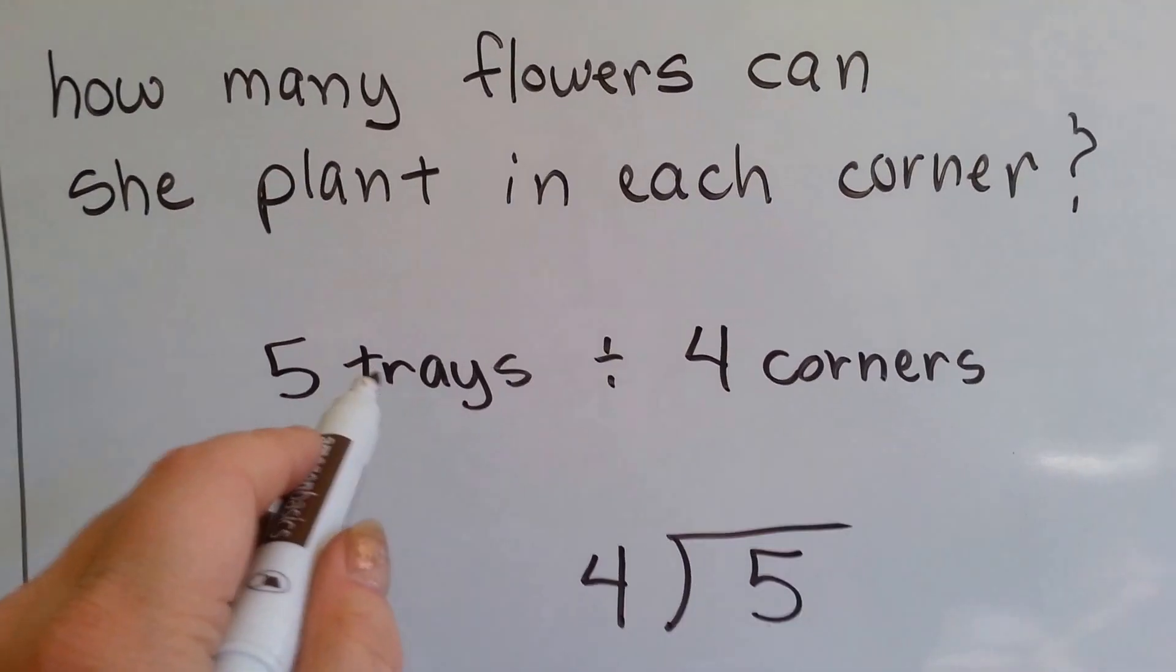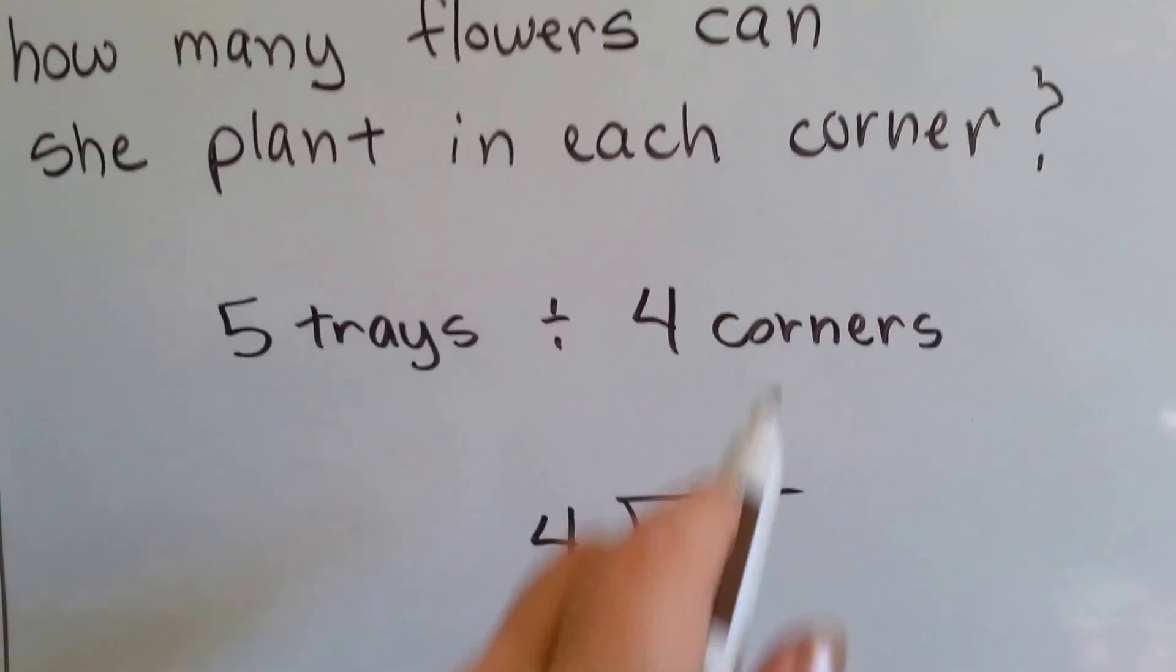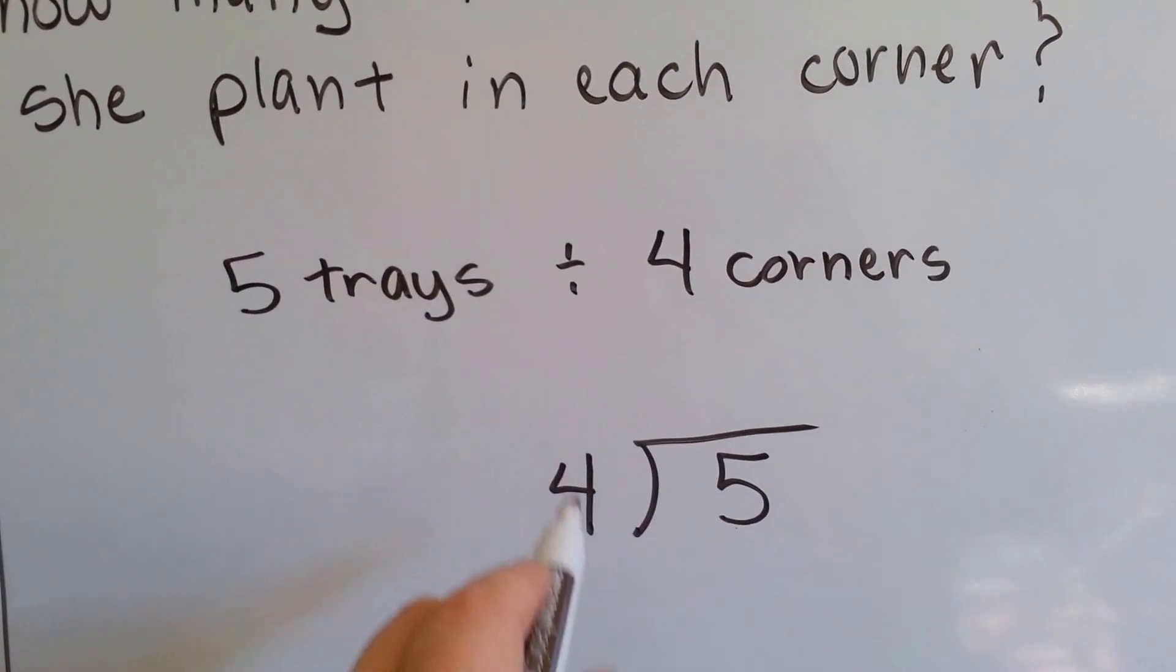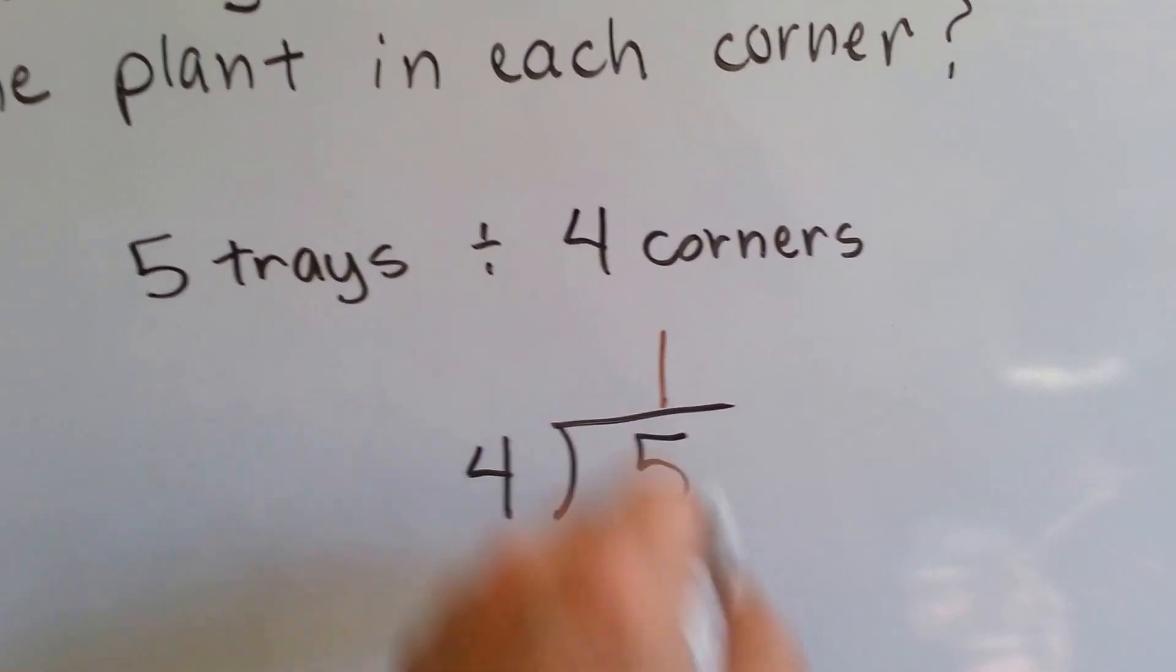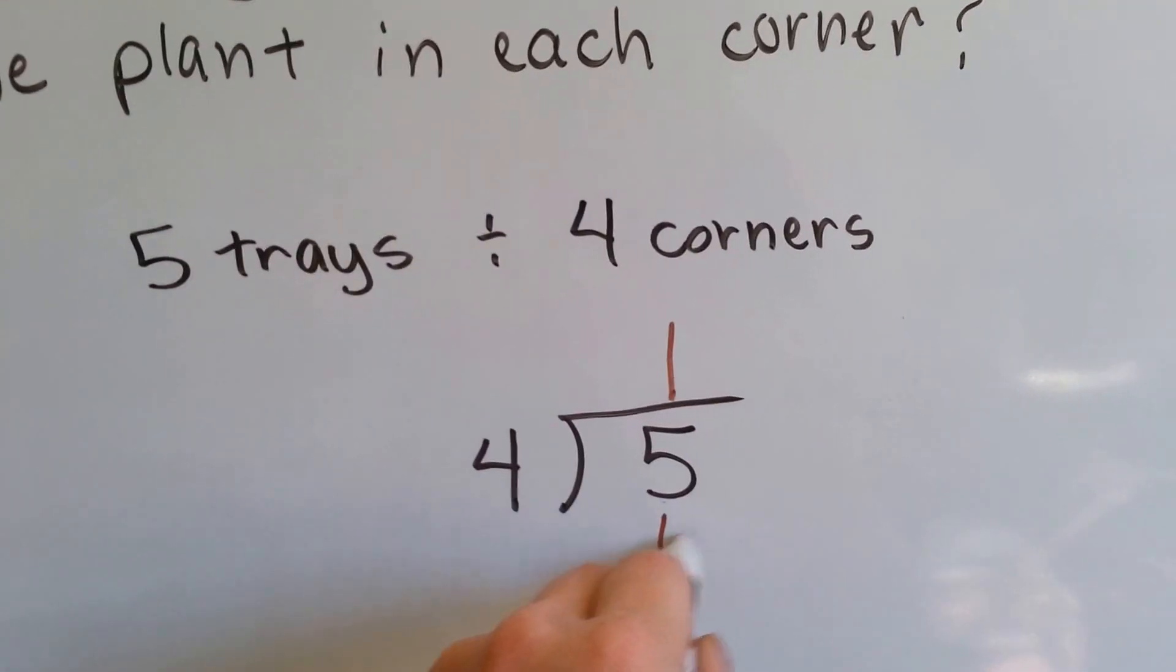All right. Well, we have five trays divided into four corners. So we need to see how many times four can fit into a five. Well, it can only fit in one time, can't it?